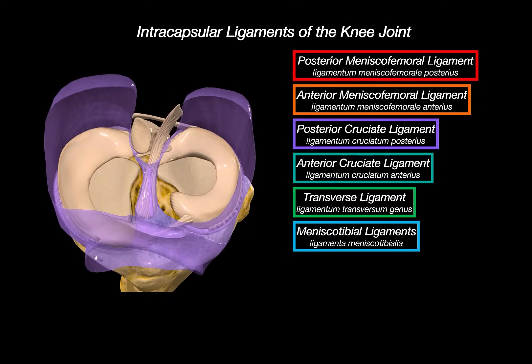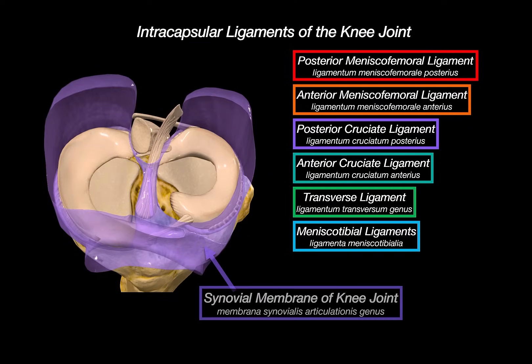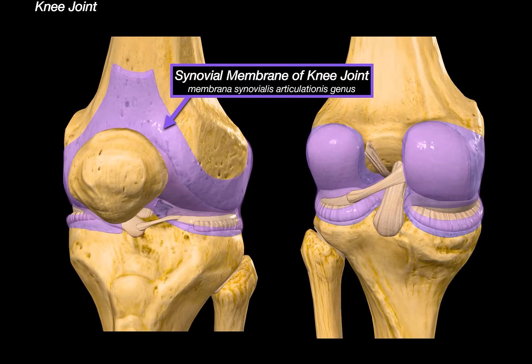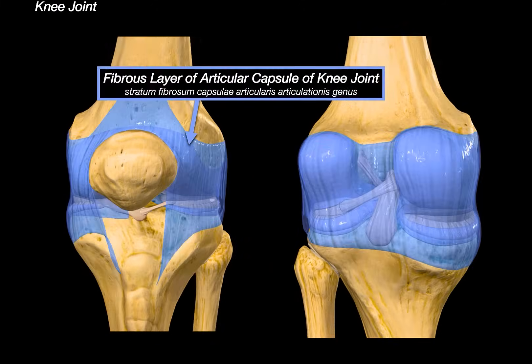This capsule consists of two parts. There's the synovial membrane, which lines the inner surfaces of the joint capsule and produces synovial fluid — this fluid lubricates the joint and helps reduce friction during movements. We can see the membrane from both an anterior and a posterior view. Lying just on top of the synovial membrane is the fibrous layer of the articular capsule, which gives the joint its outer strength and stability.